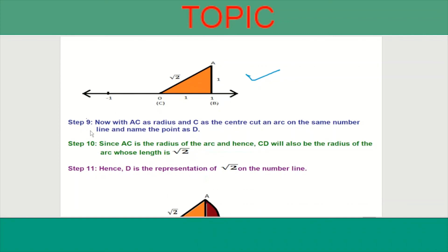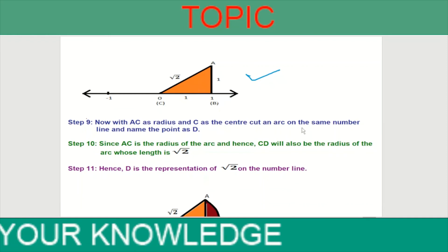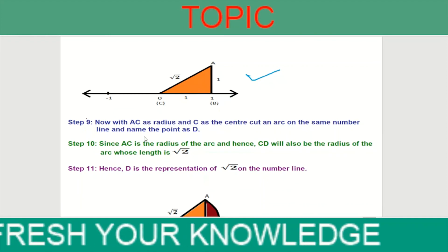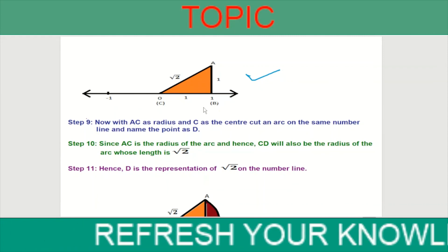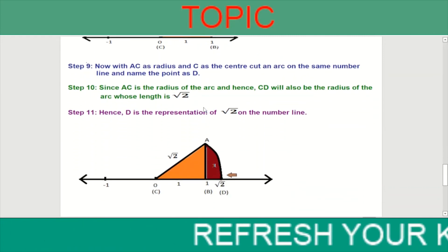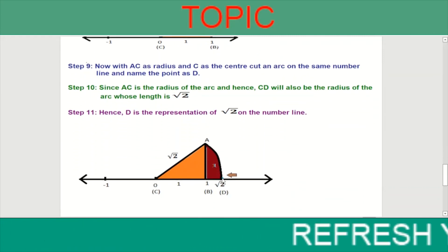Step 9: With AC as radius and C as the center, cut an arc on the same number line and name the point as D. This is D.